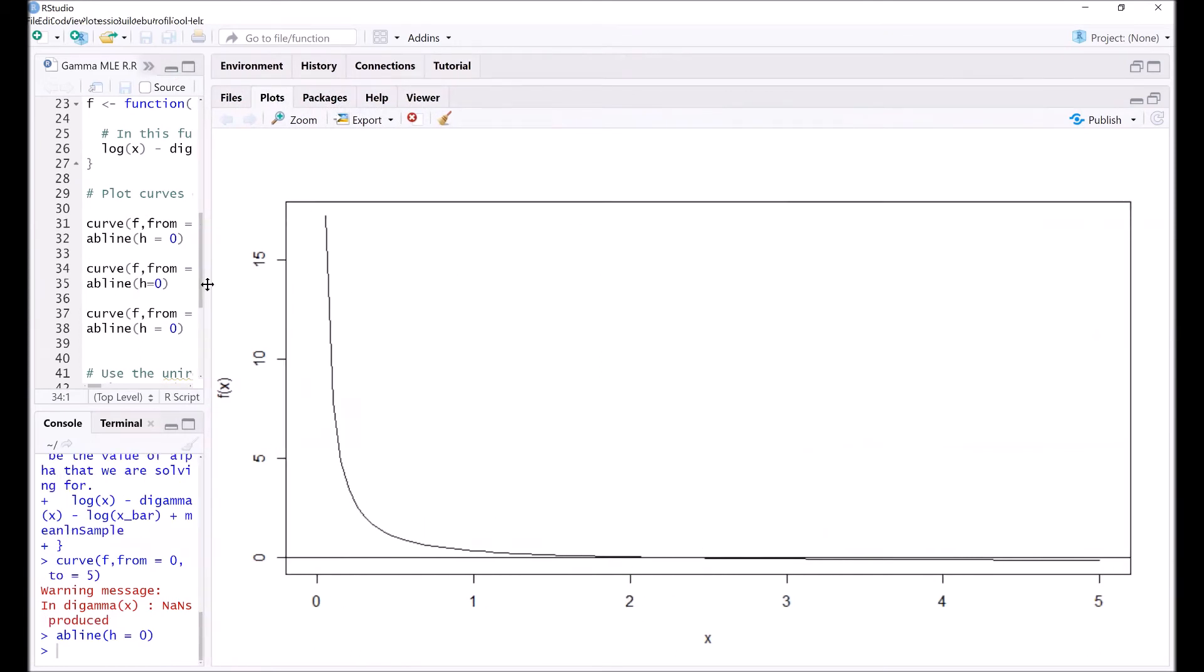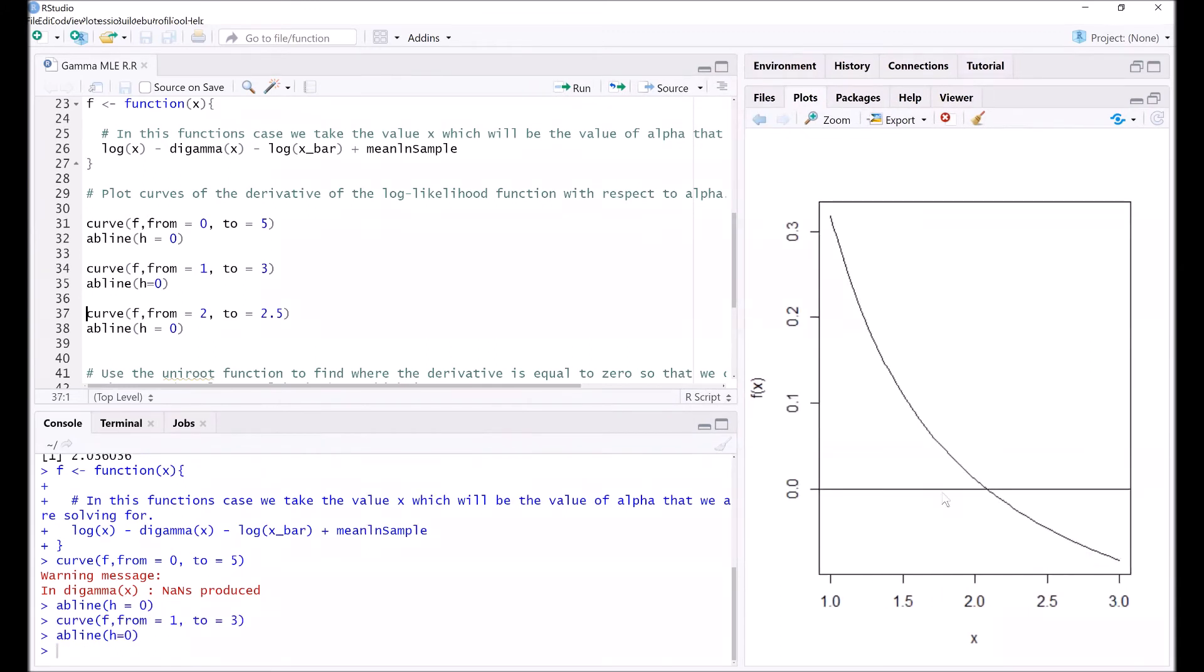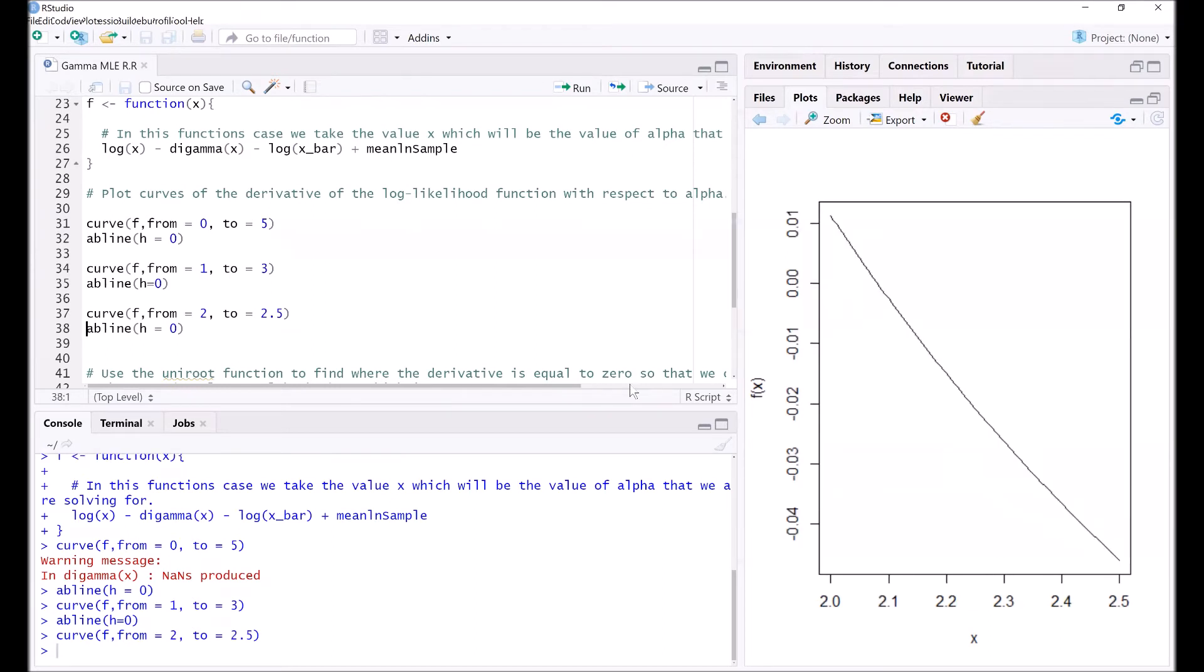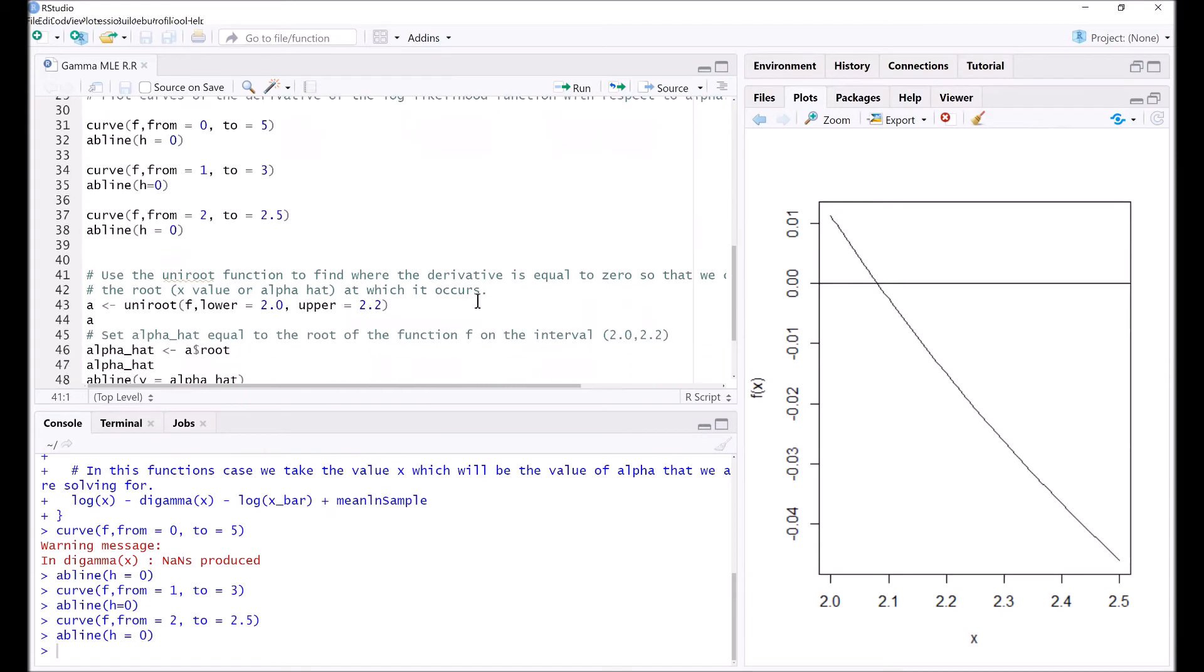Let's add a horizontal line again at y equals zero. We can see that the intersection occurs roughly just beyond two. Let's further narrow it down, and now we can see that it's in the neighborhood of two to 2.2. This will make our life easier because then we can narrow down where we need to call the uniroot function for which it will check if the function has intersected with the x-axis.